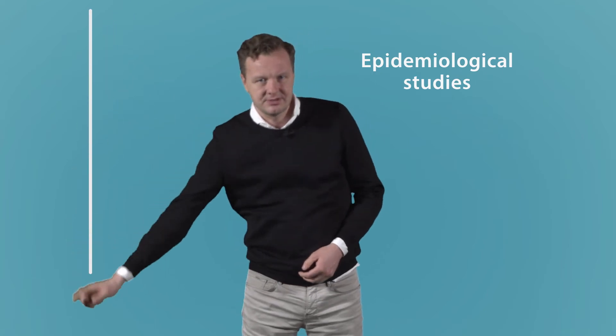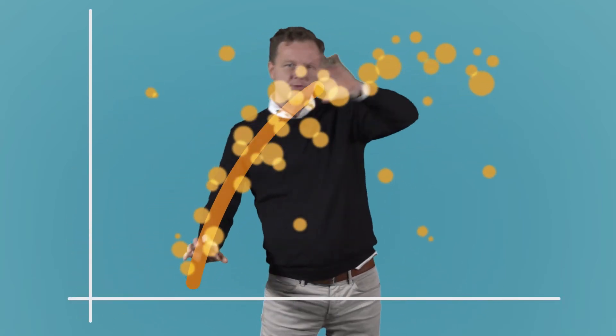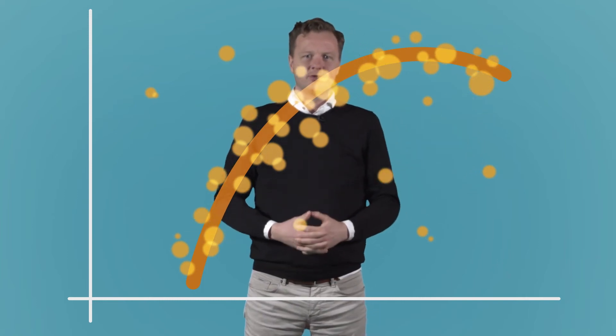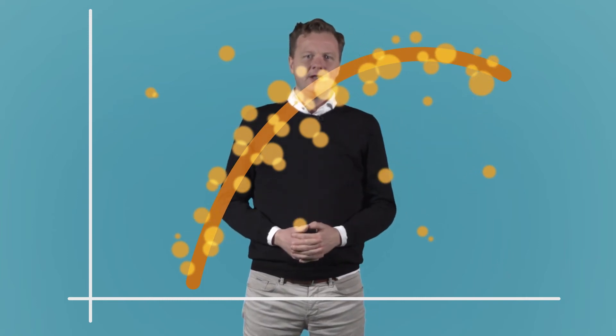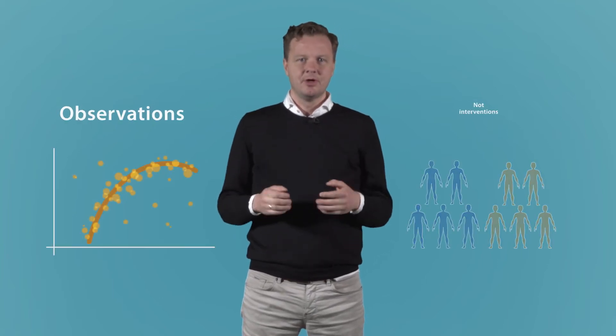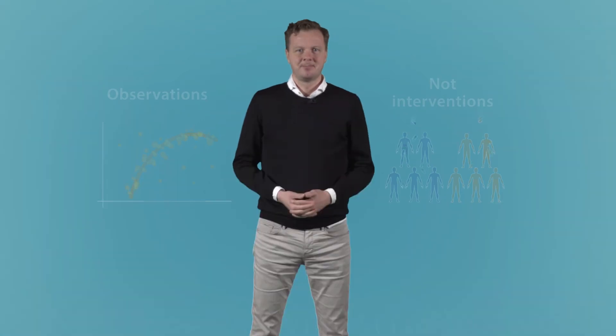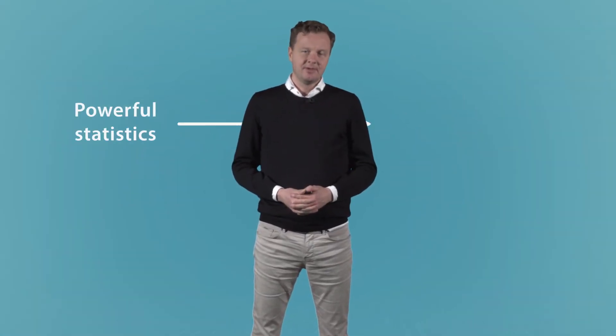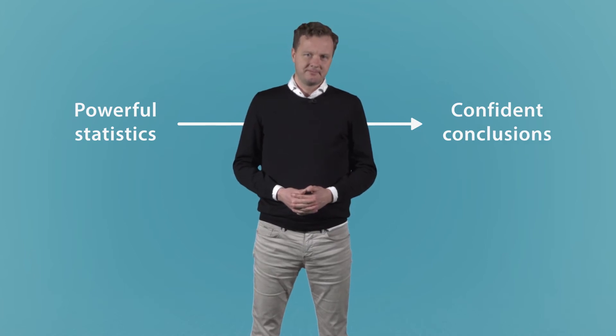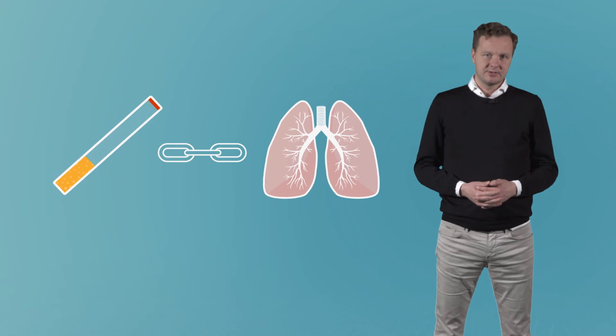Epidemiological studies describe and analyze patterns of diseases in humans. They can statistically evaluate an association between exposure to a substance and health outcomes in humans. Unlike clinical trials, these studies are based on observations, not interventions. When the evidence from observational studies is statistically powerful, confident conclusions can be drawn. A good example is the strong link between smoking and lung cancer.